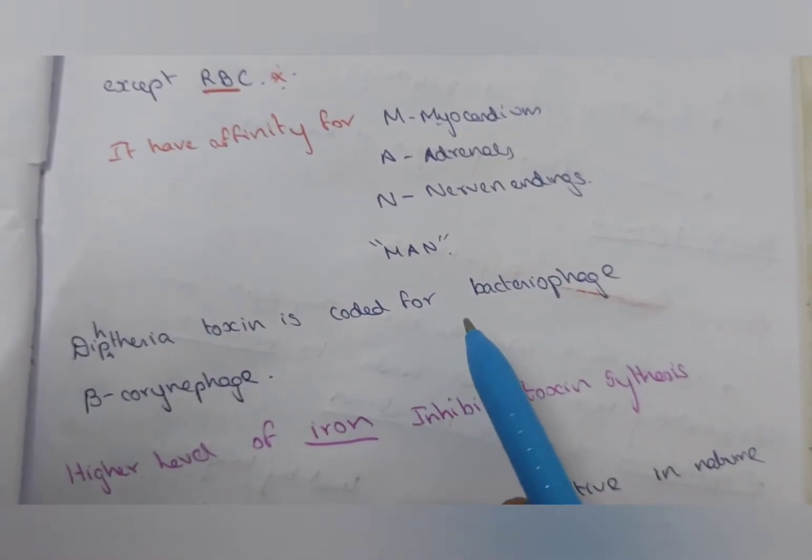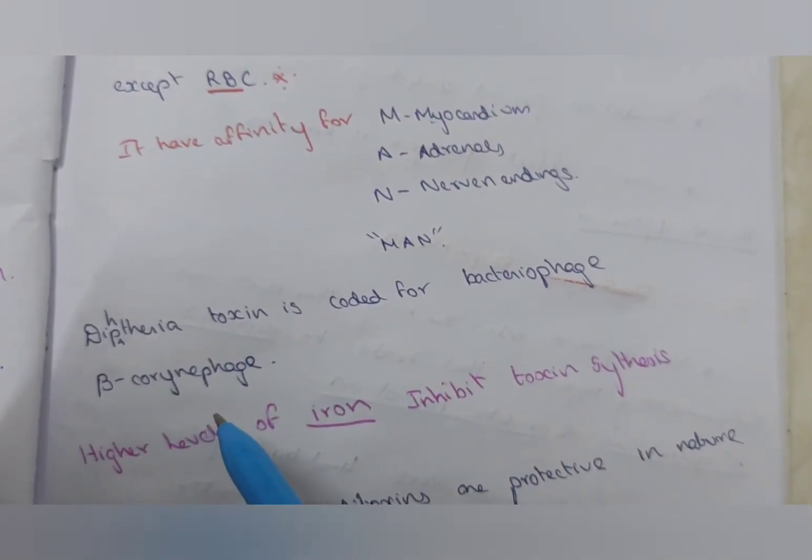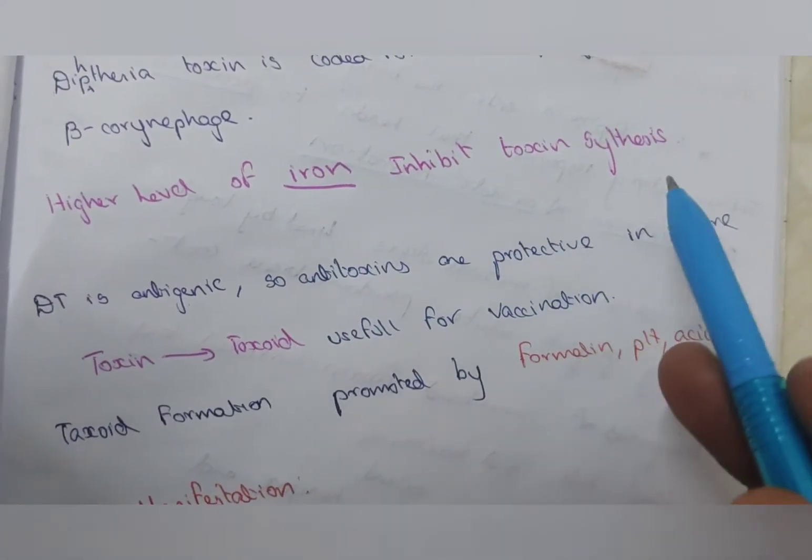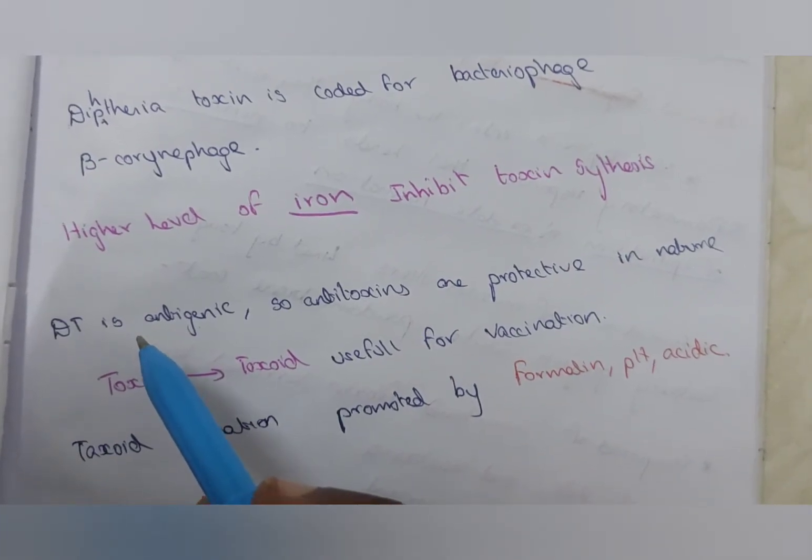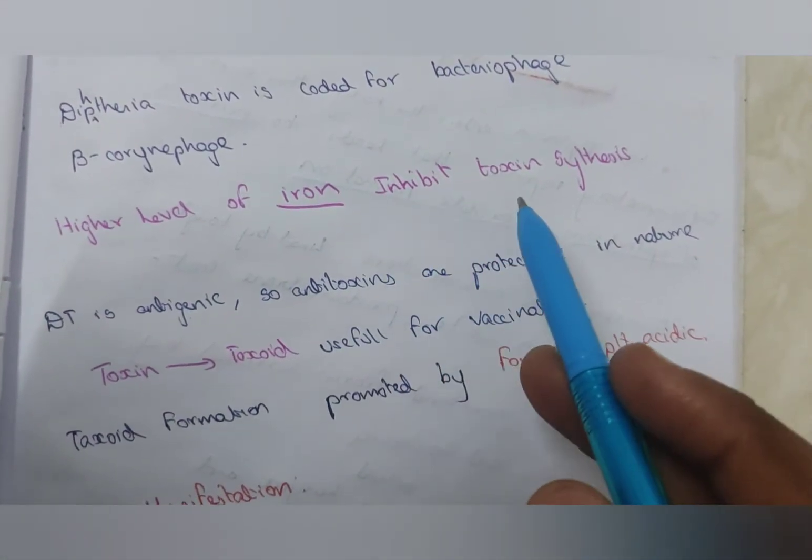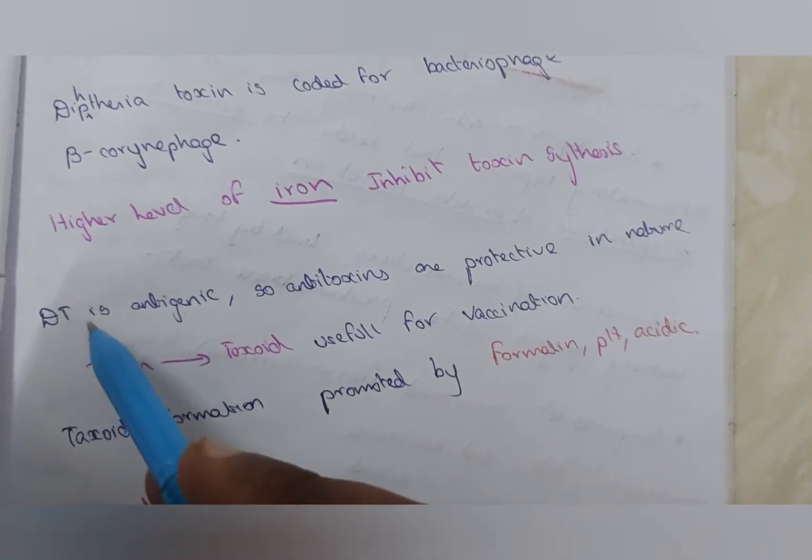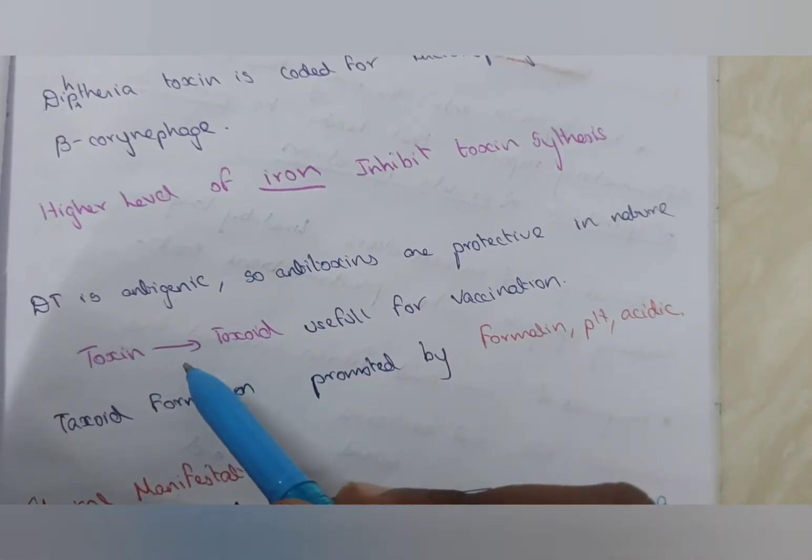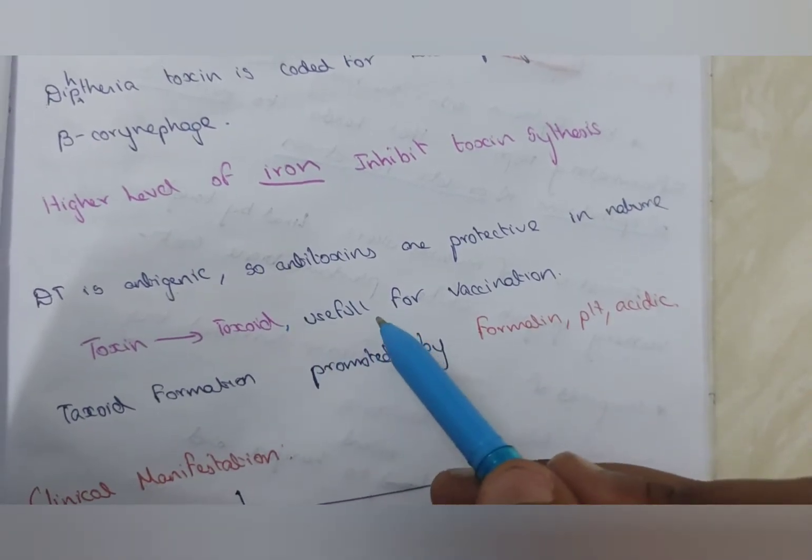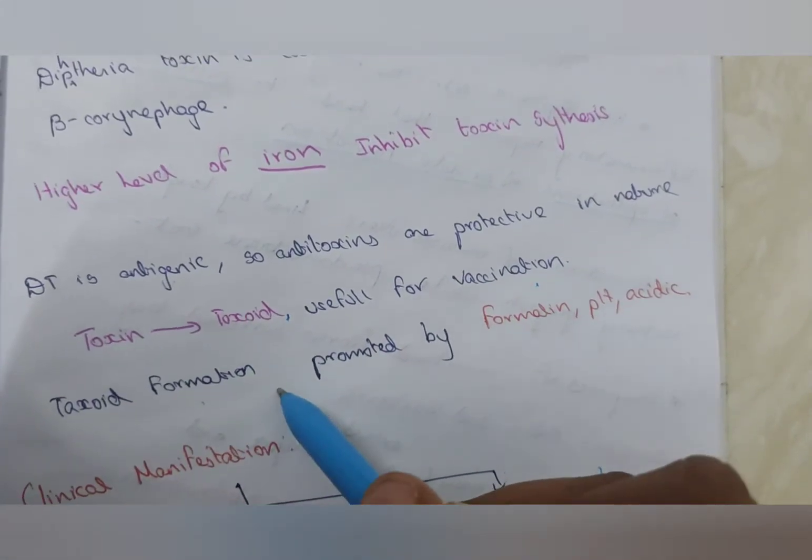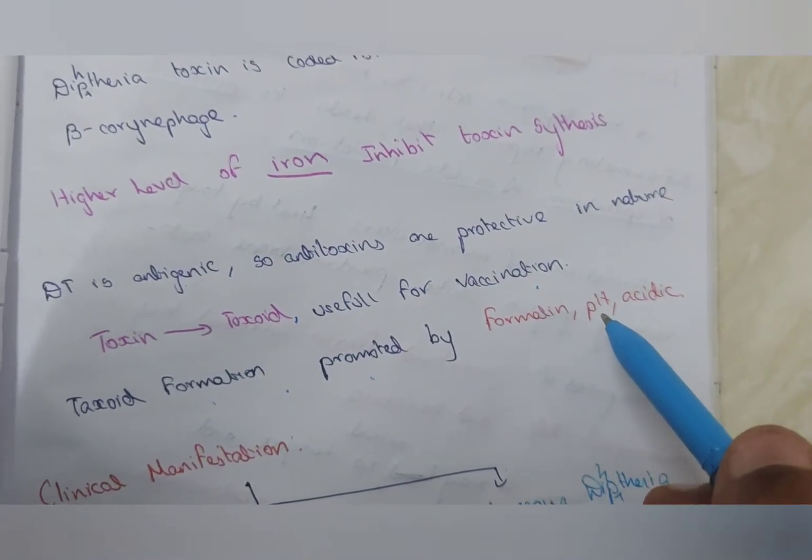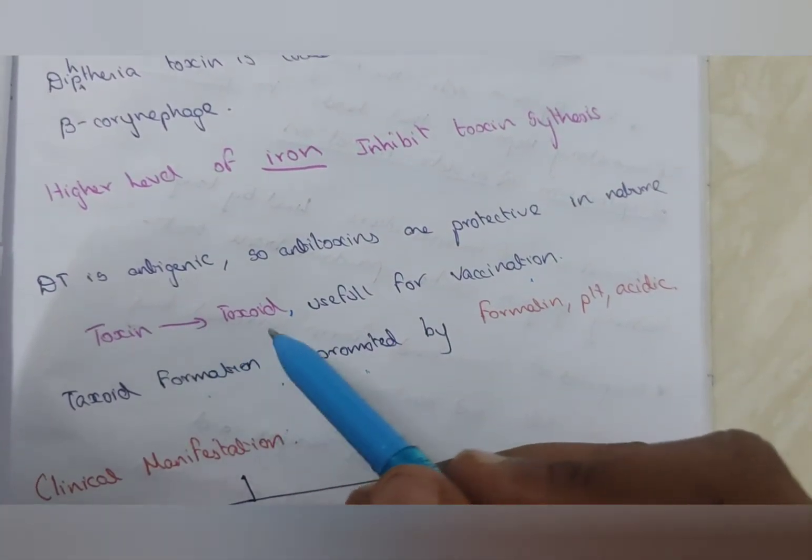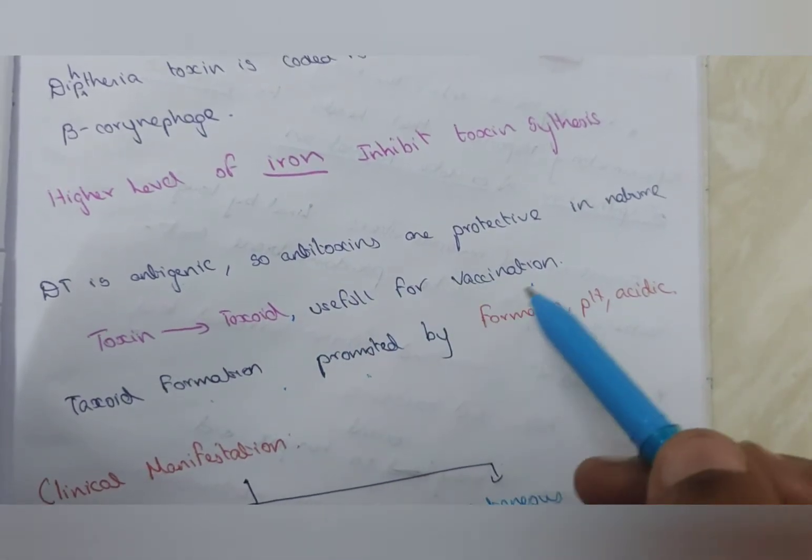Diphtheria toxin is coded for by bacteriophage, beta corynophage. Higher levels of iron inhibit toxin synthesis. More amount of iron inhibits toxin synthesis. The diphtheria toxin is antigenic, so antitoxins are protective in nature. The toxin is converted into toxoid for vaccination. The toxoid formation is promoted by formalin, pH and acidic conditions. These three promote the formation of toxin into toxoid. This toxoid is useful for vaccination.